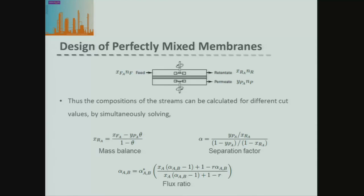This gives us three equations for our perfectly mixed membrane system. First, the mass balance for the perfectly mixed membrane. Second, our definition of the separation factor. Third, the equation for any membrane system derived from the ratio of the fluxes. So long as we specify a value of the cut, which is very typical for membranes, we have three equations and three unknowns: the separation factor, the composition of the permeate, and the composition of the retentate.